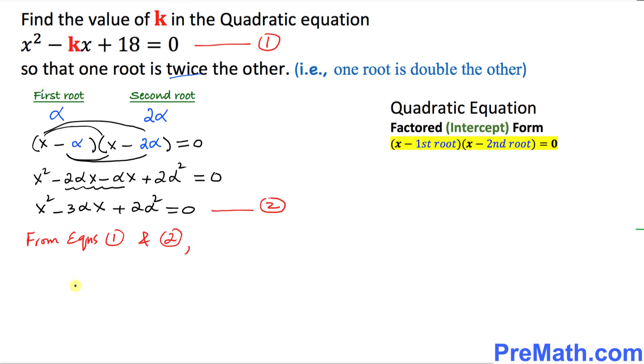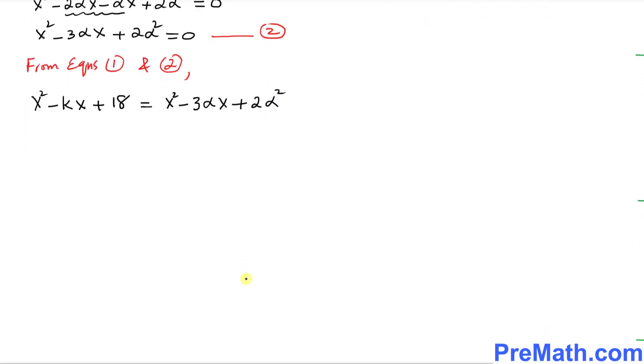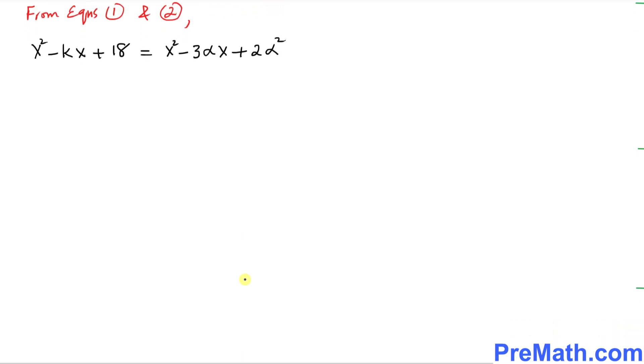I want you to write down the first equation: x square minus kx plus 18 equals to x square minus three alpha x plus two alpha square.